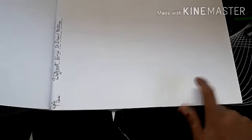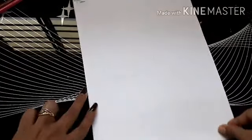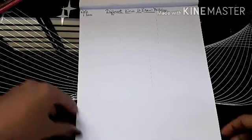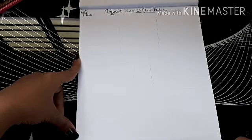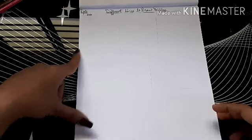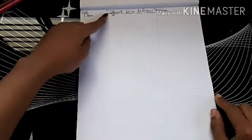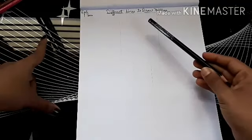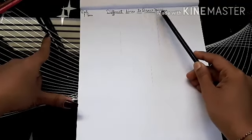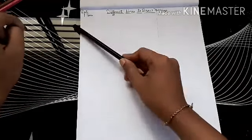Keep one thing in mind: you are always going to draw on the right hand side of your drawing book. For today's topic, hold your book in standing position, that is vertical. First put the topic name — different lines to draw patterns — and put the date.